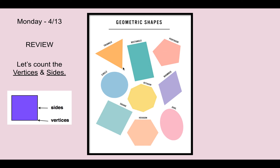When we look at a rectangle, similar to a square, we can see that we have one, two, three, four vertices, and one, two, three, four sides.